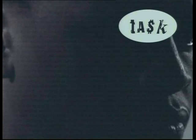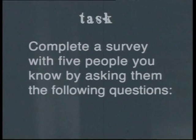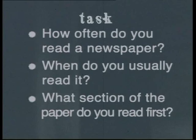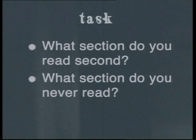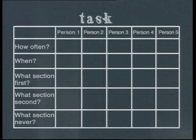Complete a survey with five people you know by asking them the following questions: How often do you read a newspaper? When do you usually read it? What section of the paper do you read first? What section do you read second? What section do you never read? Put your answers in a table and compare what you've discovered with one of your classmates. This will enable you to see what types of articles are the most and least popular with the people that you know.